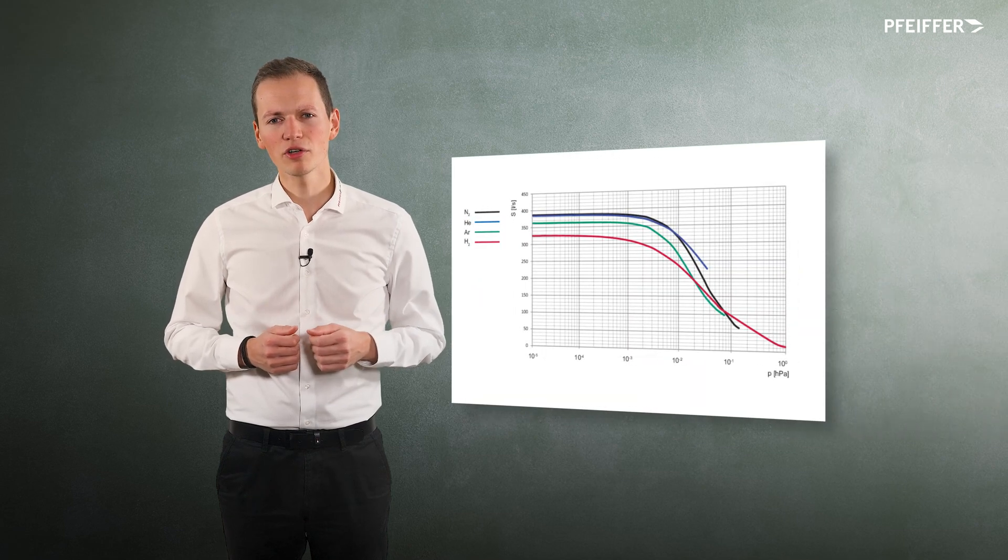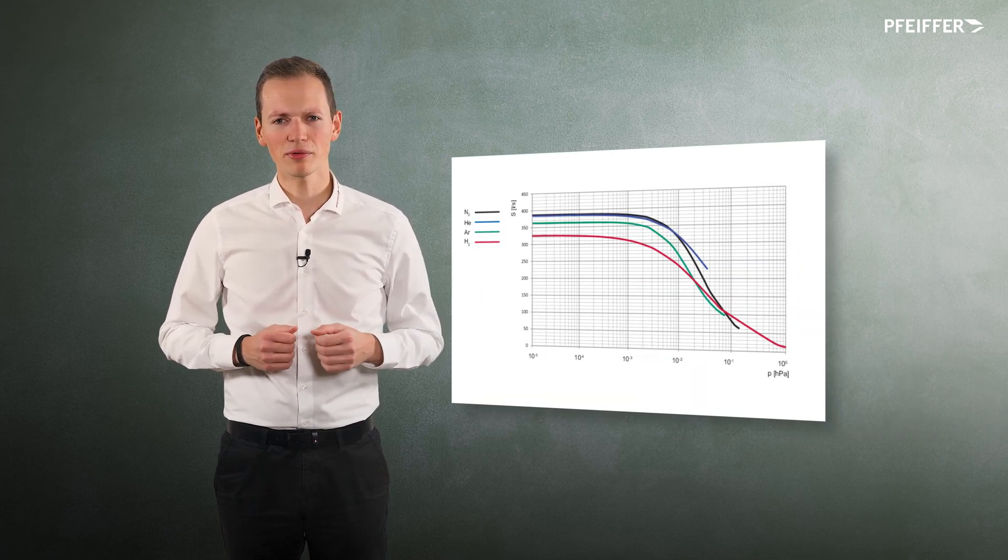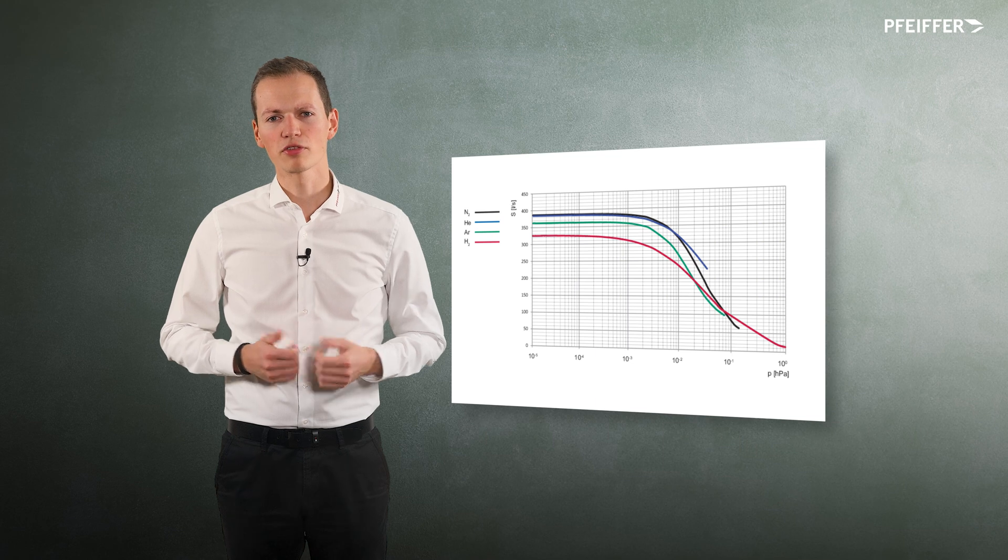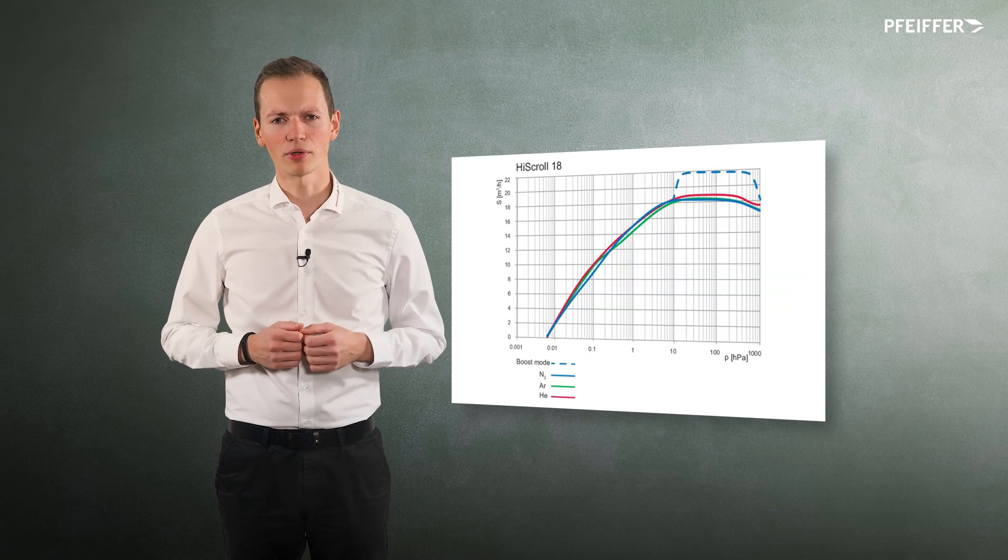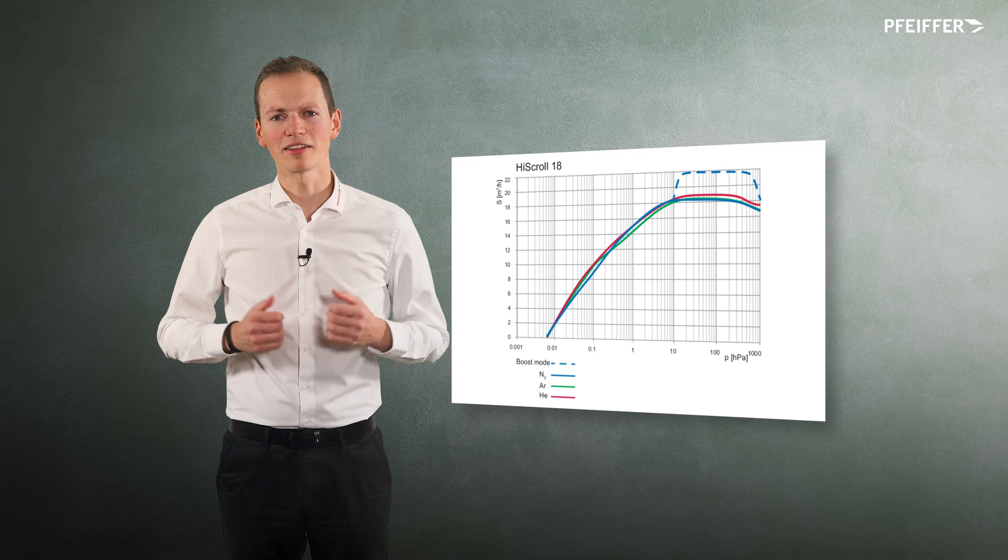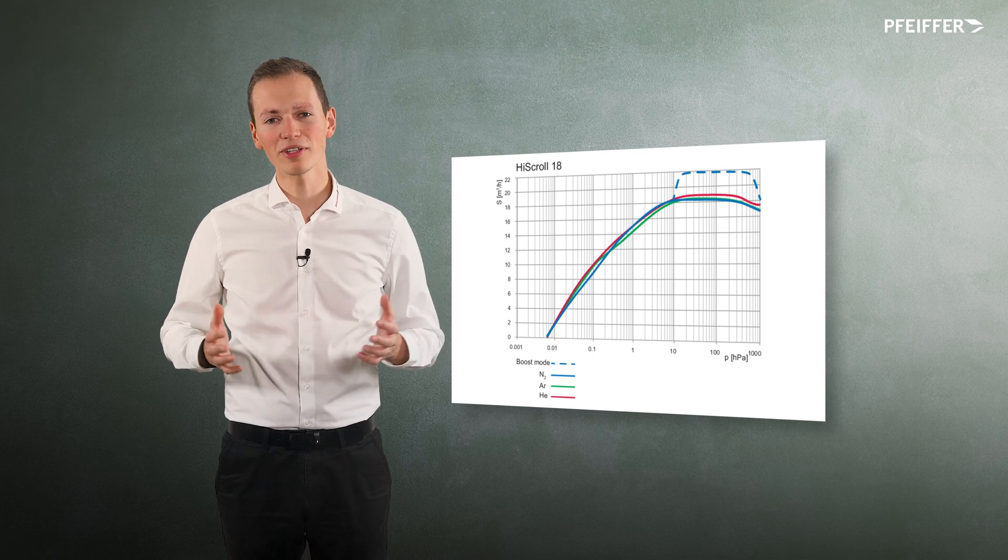For example, turbomolecular pumps have a higher pumping speed for nitrogen than for helium. Scroll pumps on the other hand operate independently of gas type, so they have approximately the same pumping speed for helium and nitrogen.